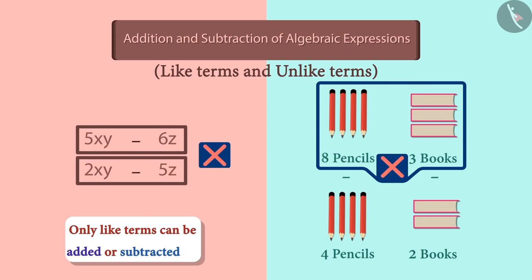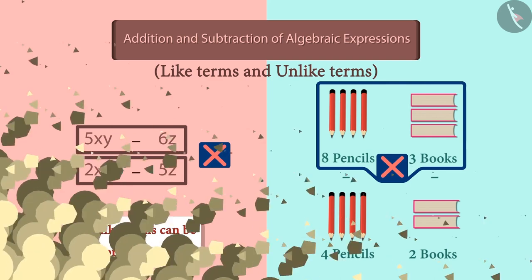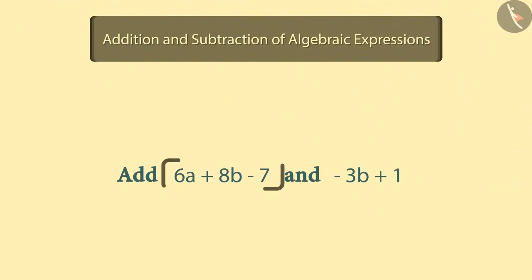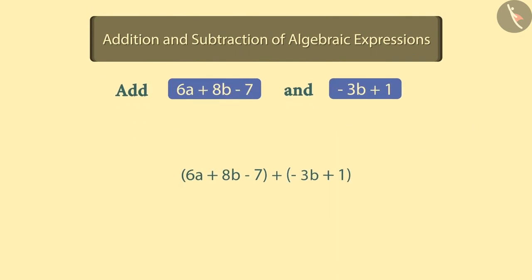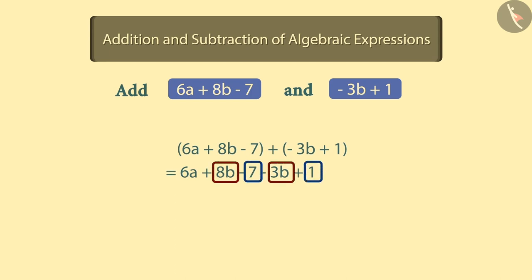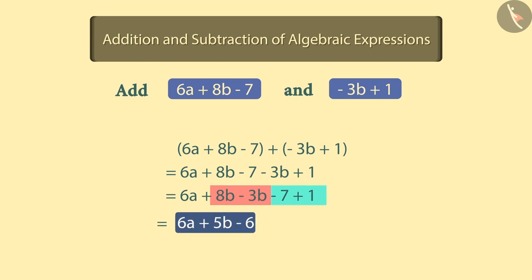Let's see an example to understand this concept better. Look at these expressions. Let's add these two expressions. We get this after opening the brackets. We know that only like terms can be added and subtracted. That is why we group like terms. Now, when we add the pairs of these two like terms, we get the result.